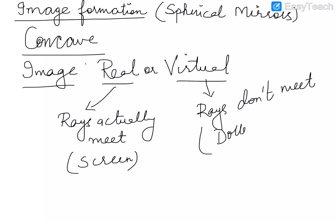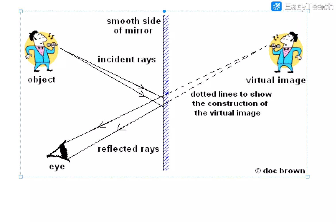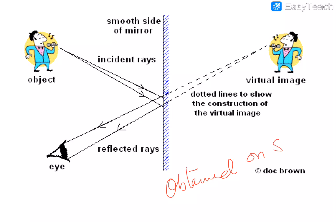We draw dotted lines for virtual images. As shown in this diagram, as observed in a plane mirror, the image formation is always virtual. Virtual means that when you are observing, the rays from this object reflect, but it appears as if the rays are coming from a point behind the mirror. So the virtual image of the object is always erect. Size may differ — it can be magnified or diminished.